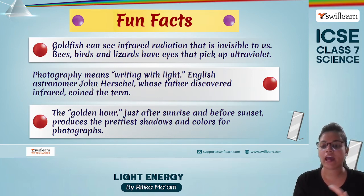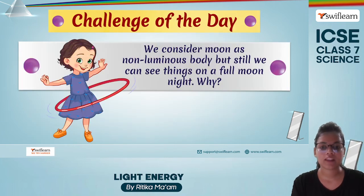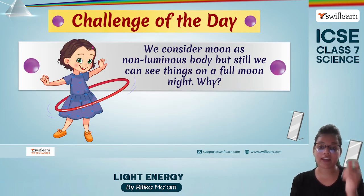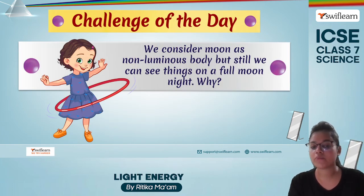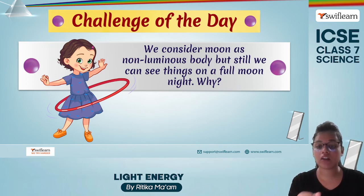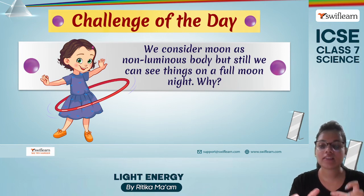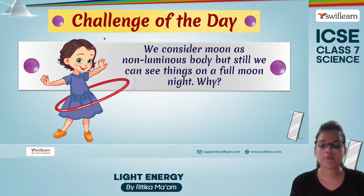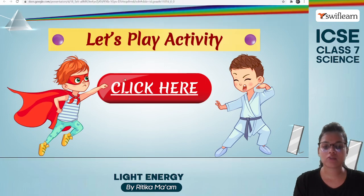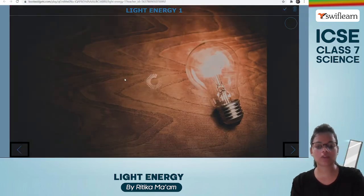The golden hour, just after sunrise and before sunset, produces very beautiful shadows and colors ideal for photographs. Challenge of the day: we consider the moon a non-luminous object — meaning it doesn't have its own light — yet we can still see things on a full moon night. Why? Because the moon reflects the light coming from the sun, and it is because of that reflected light that we are able to see objects.